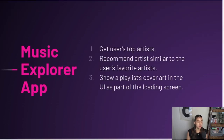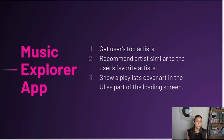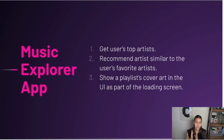In our theoretical Music Explorer app there are three things we want to achieve: first, get the user's top artists; second, recommend artists similar to that artist; and third, show a playlist cover art in the UI as part of the loading screen. The data we need from our API is top artists of a specific user, similar artists to that artist, and some playlist cover art. Just remember — APIs are all about fetching data and then working with that data for your app.